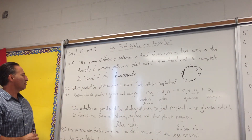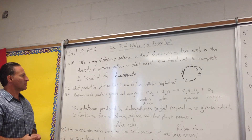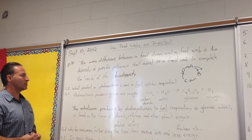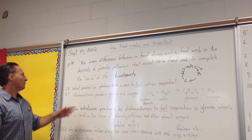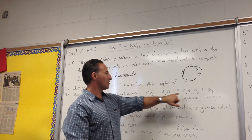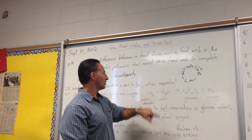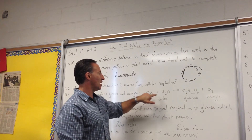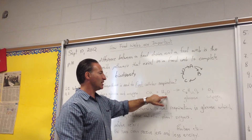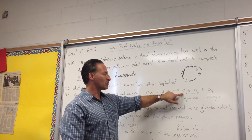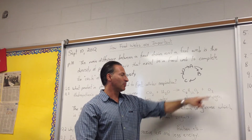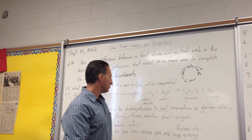The first question is: what product of photosynthesis is used to fuel cellular respiration? Photosynthesis produces glucose and oxygen. From the chemical equation, carbon dioxide and water are used by trees to produce glucose, and the trees form oxygen as a byproduct.